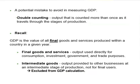We should be careful to avoid a potential mistake in measuring GDP: double-counting, or counting an output more than once as it travels through the stages of production. The definition of GDP is the value of all final goods and services produced within a country in a given year. Final goods are different from intermediate goods. Intermediate goods are provided to other businesses at an intermediate stage of production, not for final users, and should be excluded from GDP calculation.